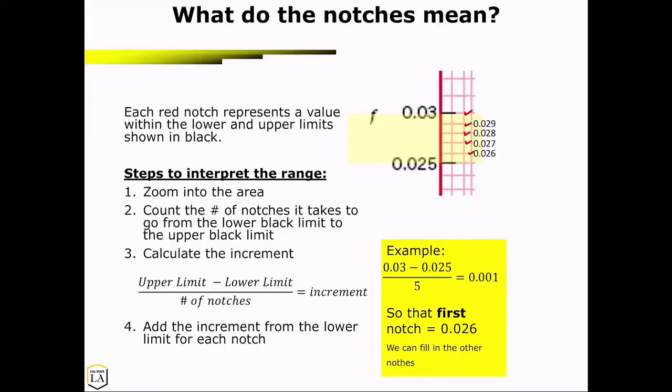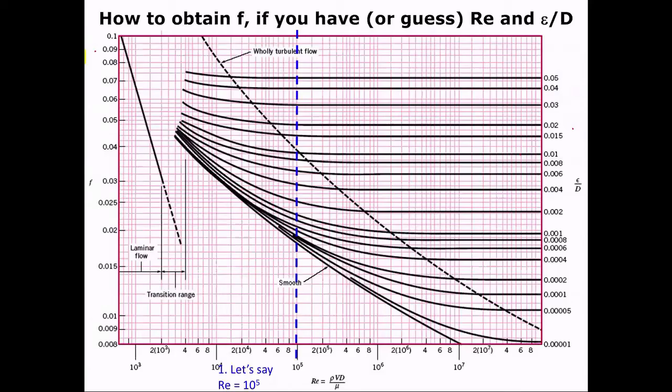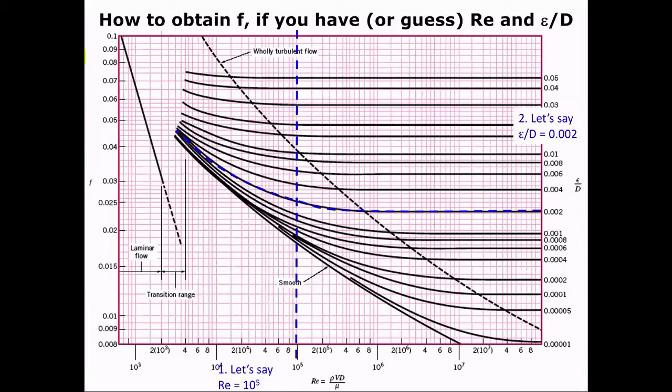Let's walk through some examples. So how do we obtain the friction factor if we have a Reynolds number and the relative roughness? I'm going to walk you through a few examples. So first, let's start with the Reynolds number equal to 10 to the fifth power. And then we're going to say that our relative roughness is 0.02.